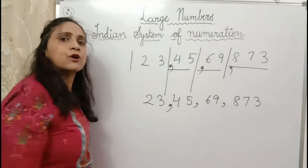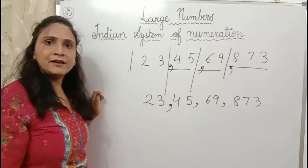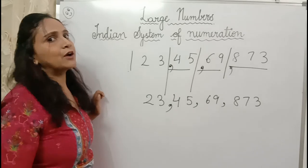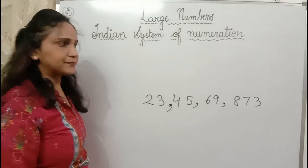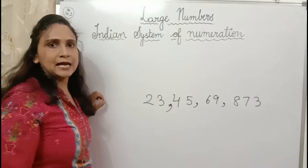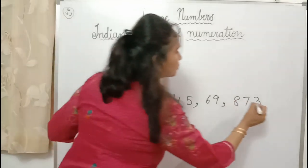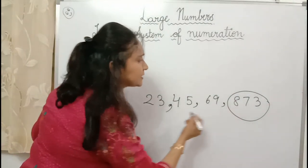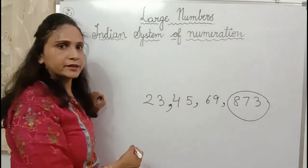Now, how did I put commas? What are the members of each family? What are these families called? Now we are going to learn that. These families are called periods — period order. This is one's period order.